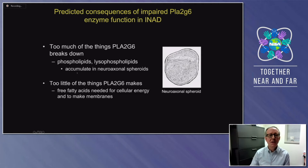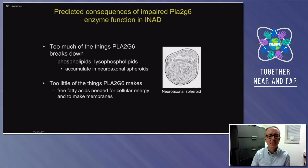The other consequence we can't see under the microscope is that there will be too little of the things PLA2G6 would normally make — the fatty acids. There won't be enough of these needed for either energy production or to make membranes.